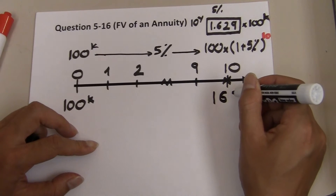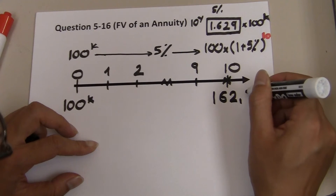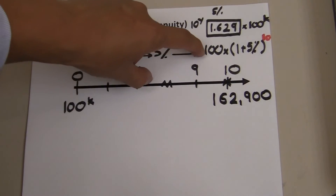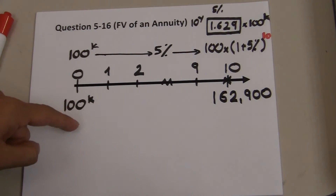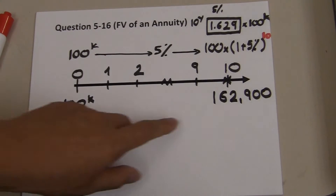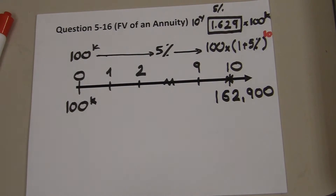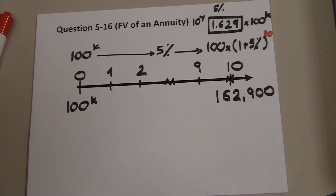The value of the house will grow to $162,900. If you calculate using the formula directly, the number will be slightly different due to rounding. So the first question is answered: 10 years from today you need $162,900 to buy the house.